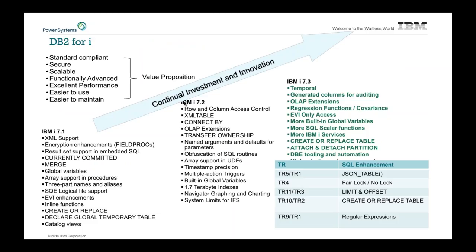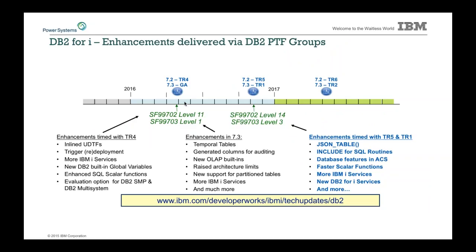With this particular TR, as with many others, we have a significant list of updates — both large and small items. The delivery mechanism for the new database support is SF99702 and SF99703, levels 13 and 14. Even though this was announced in a TR, the delivery of database stuff is still in database PTF groups.